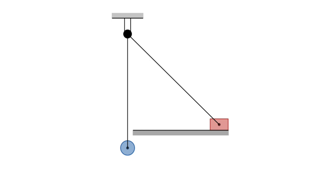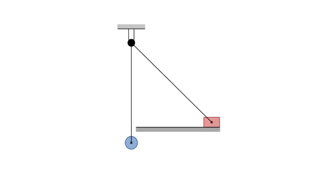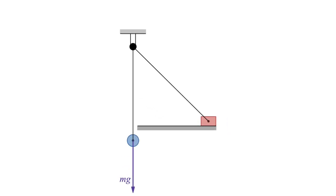Normally you start these problems by looking at the forces involved. The weight experiences a gravitational force, which is reduced by the force from the tension in the string. For the block, we only need to consider the horizontal component of the tension force, since vertical forces are balanced by definition.